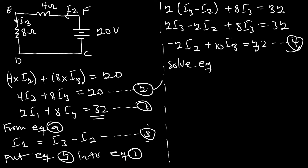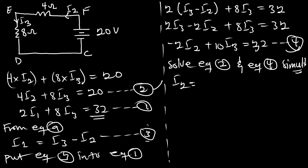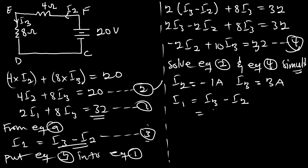Solving equations 2 and 4 simultaneously gives I2 = −1 ampere and I3 = 3 amperes. Using equation 3: I1 = I3 − I2 = 3 − (−1) = 4 amperes.